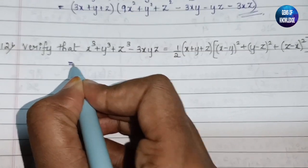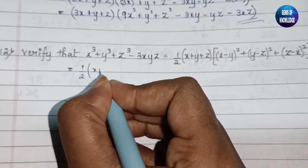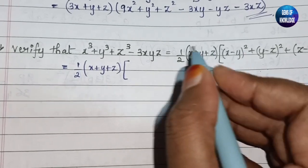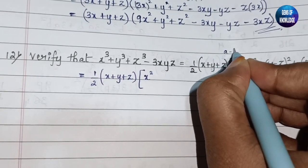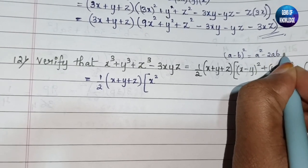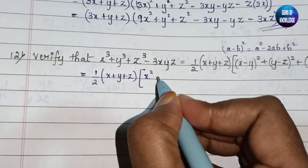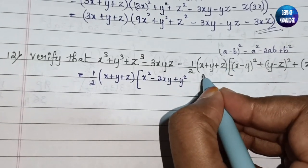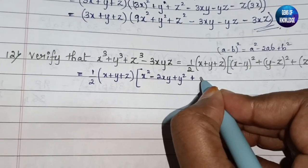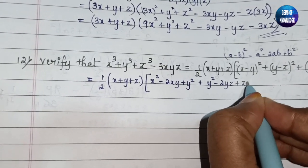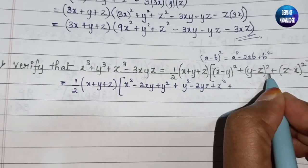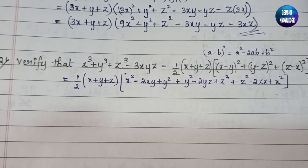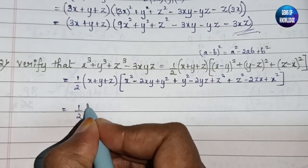We take this part: ½(x + y + z), keeping it as it is. Then we open up all the brackets. (x - y)² = x² - 2xy + y², using the identity (a - b)² = a² - 2ab + b². Then (y - z)² = y² - 2yz + z², and (z - x)² = z² - 2zx + x².